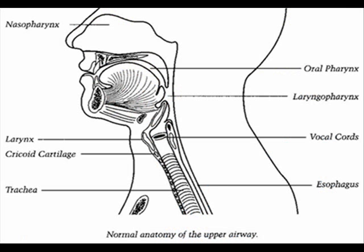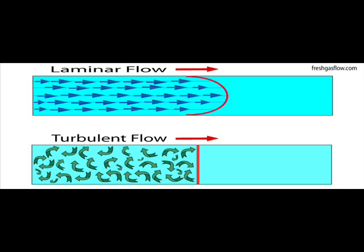Gas flow in the upper and large airway is predominantly turbulent. Turbulent flow is highly influenced by gas density.